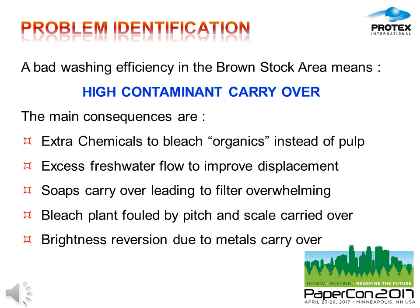A second negative consequence is the excess of fresh water that you need to try to drain your pulp in the best way. Another problem is on the filter — if you have a lot of soaps, they can create a big problem on the filter. Another problem is the presence of pitch, which can create problems during the paper process and decrease the quality of the paper you obtain at the end. Last but not least is brightness reversion, because when the content of metals is too high, you can have the phenomenon of brightness reversion.